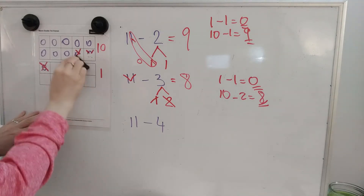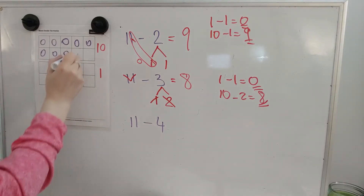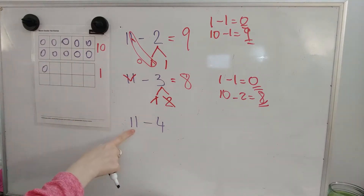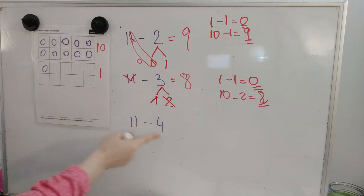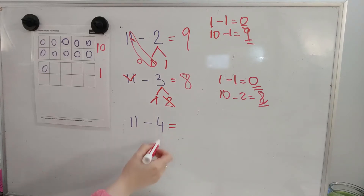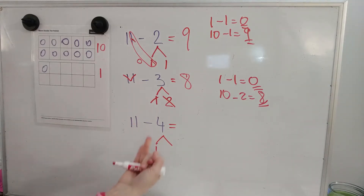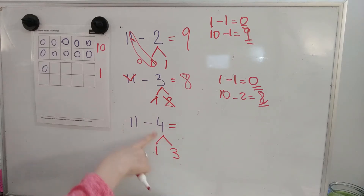Let's do 11 minus 4. There's my 11. Again, 11 has a 10 and a 1. Now we're going to take away the number 4. Now if I just look here, I want to take 1 from the 1's place. So I'm going to put the 1 here that I want to take away. If I take away 1, there's still a 3 left because I only took away 1. I want to take away 2, 3, 4. I need to take away 3 more, right? Because 1 plus 3 is 4.